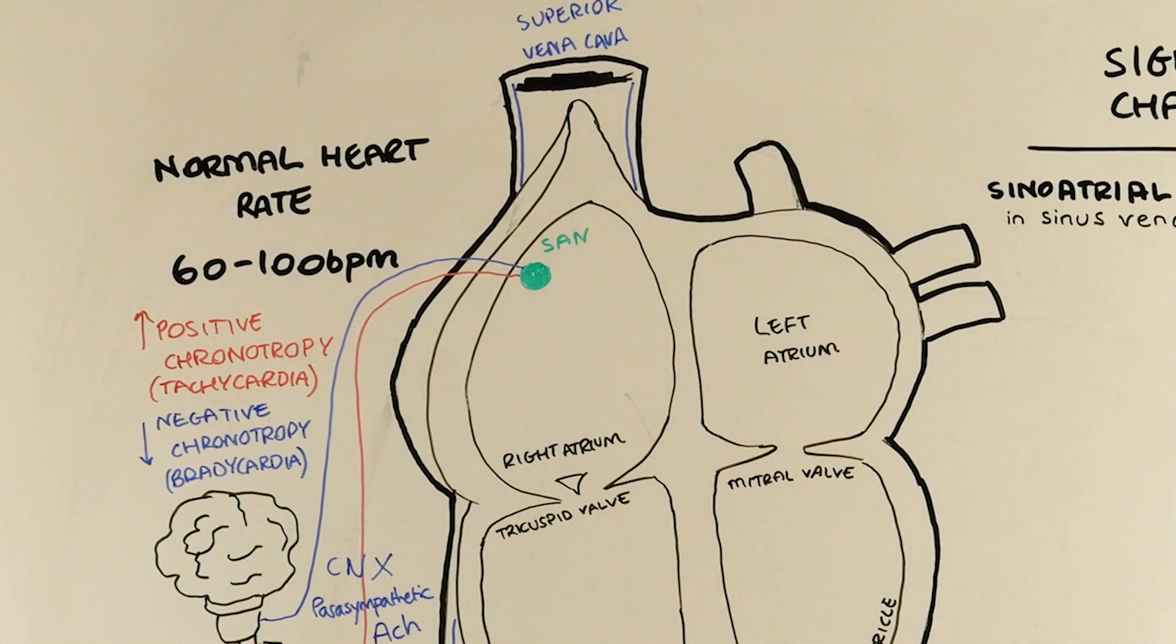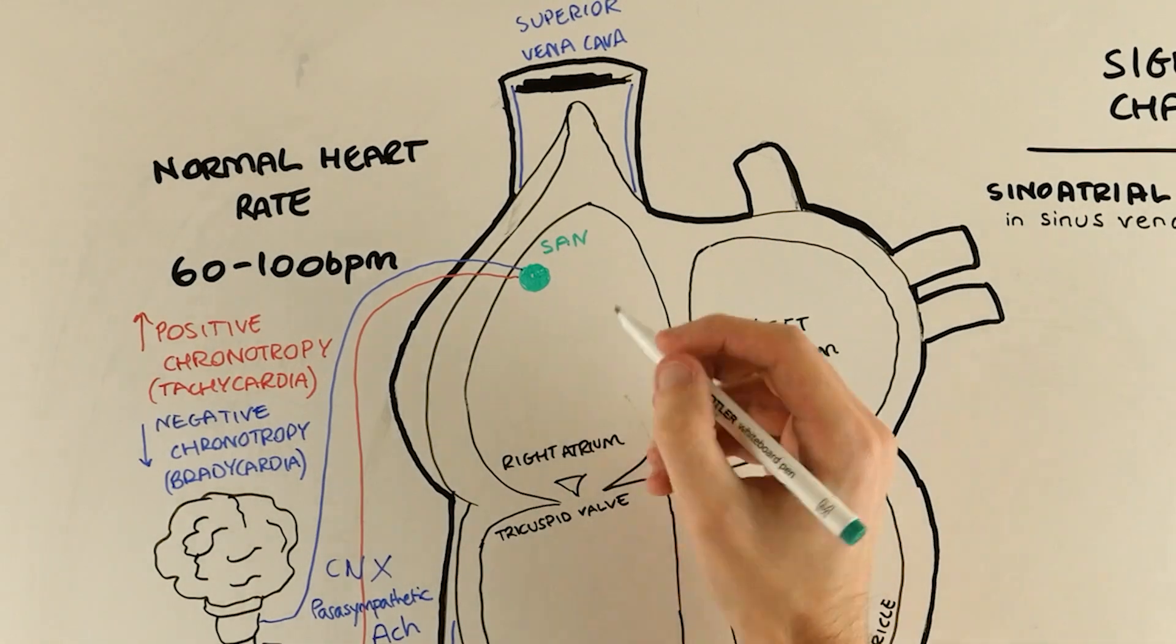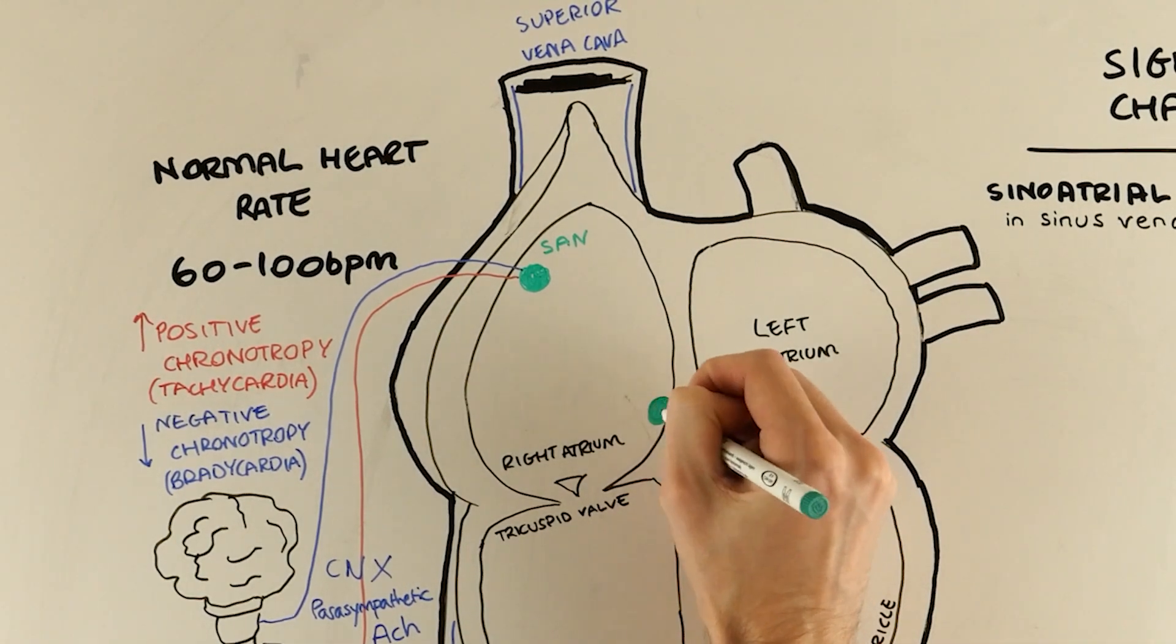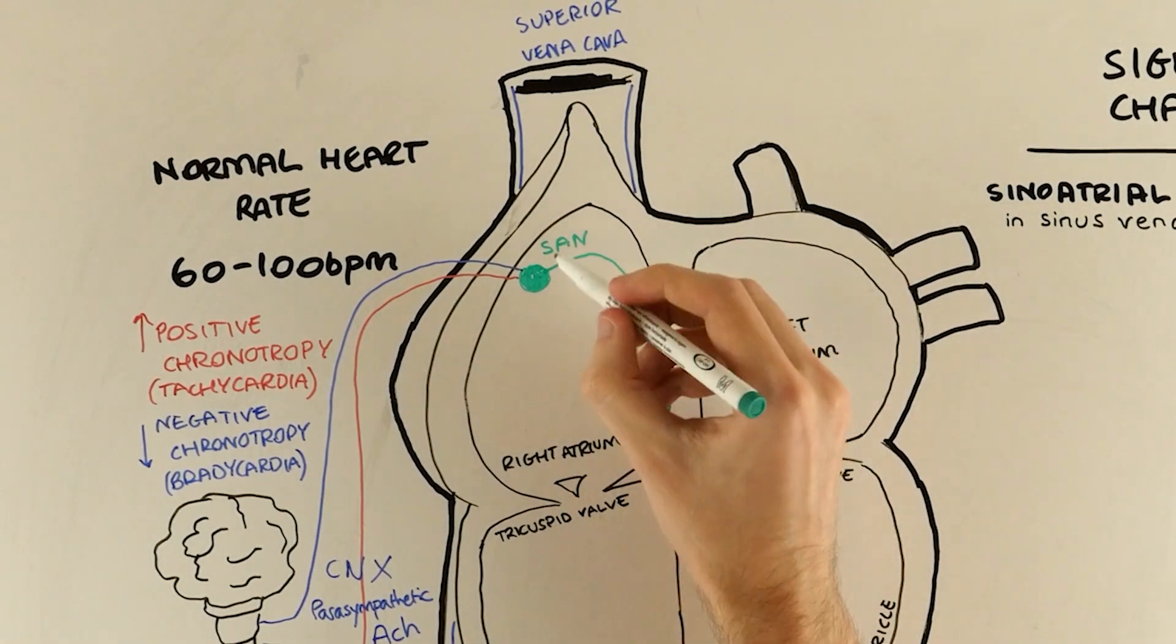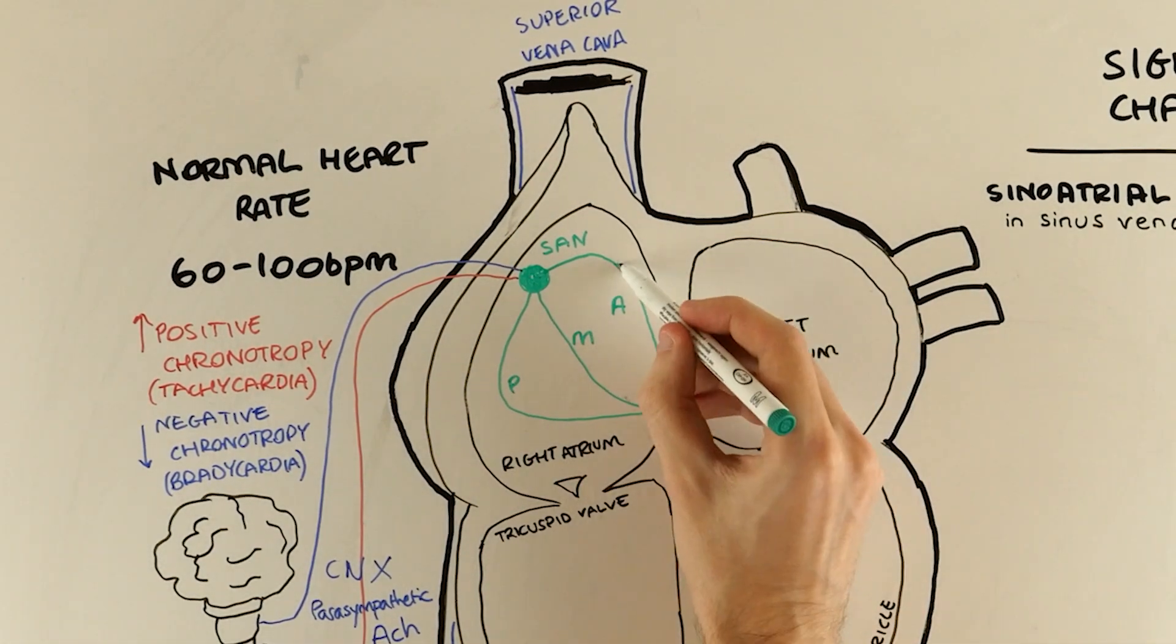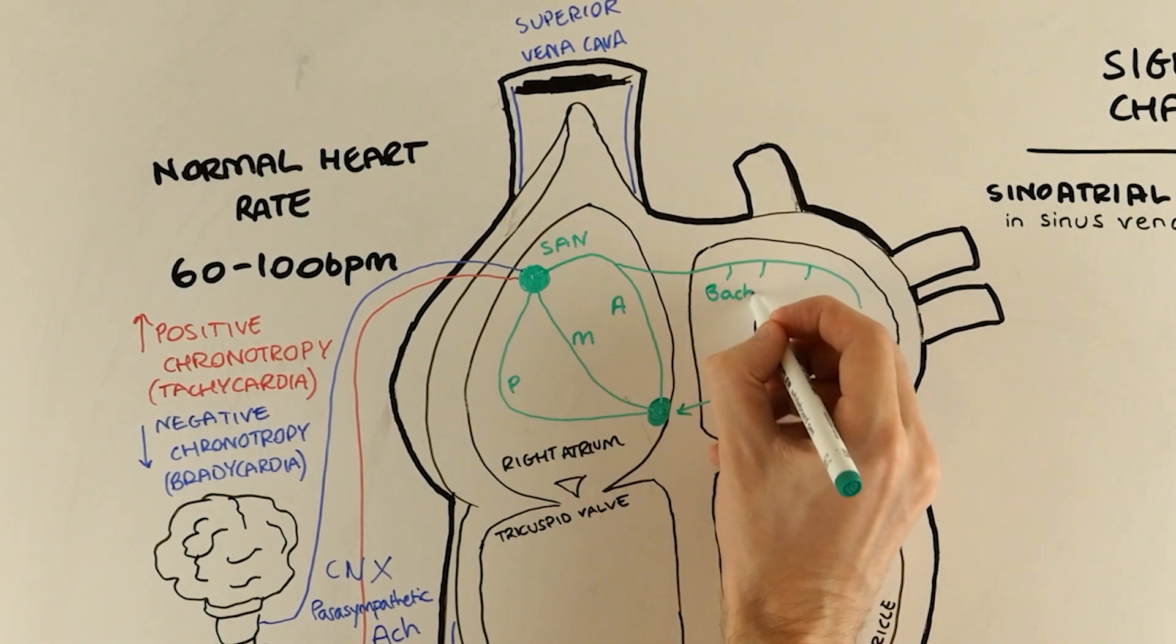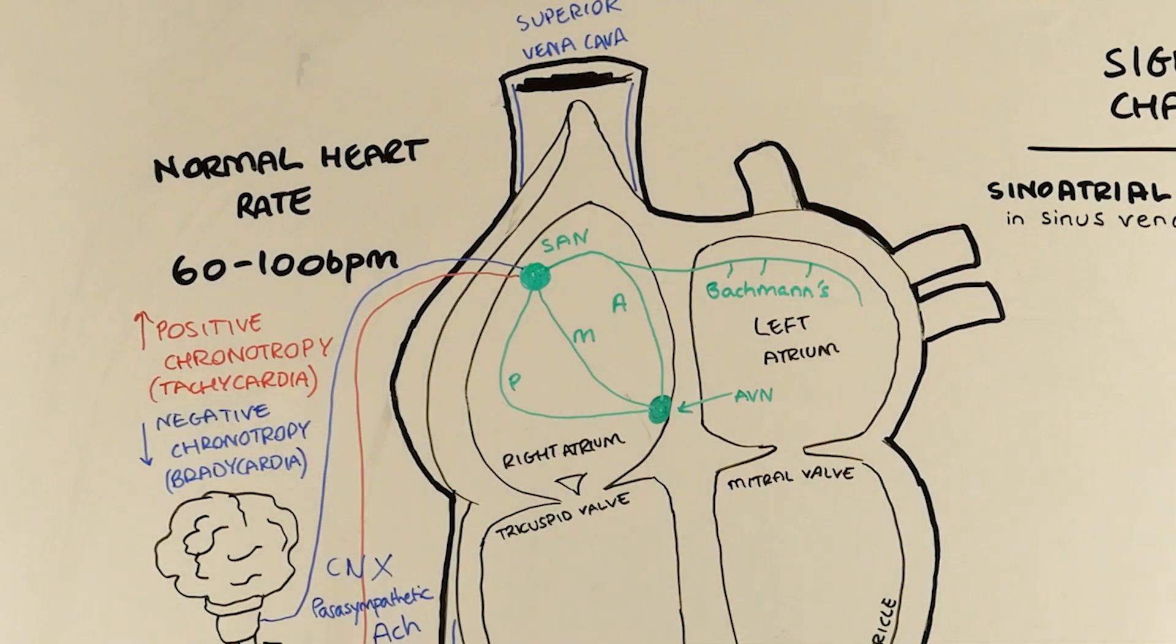So now that we understand how the sinoatrial node works it's going to fire off a signal to depolarise the atria and allow them to contract together and fill the ventricles with blood. This signal travels via three pathways known as the internodal tracts. The anterior tract, the middle tract which we also call Venkibak's tract, and the posterior, or Thorol's tract, which all culminate together at the atrioventricular node.